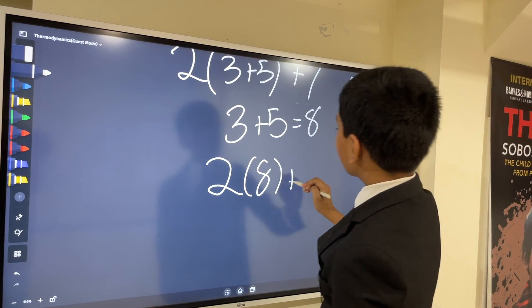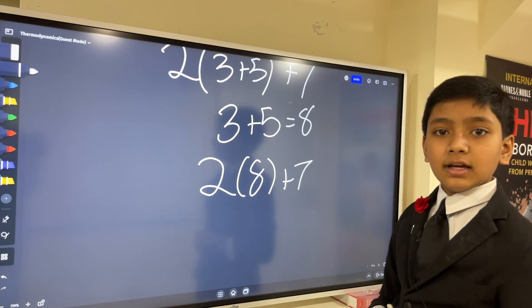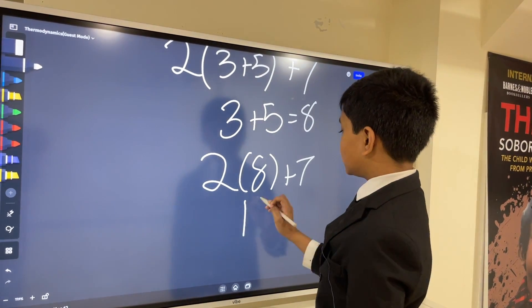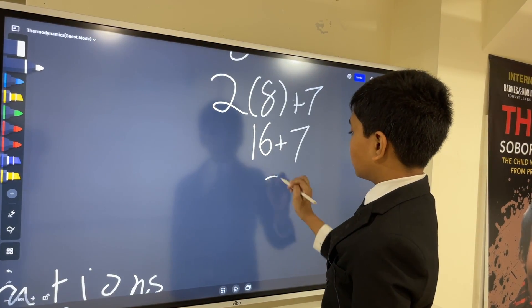And then, move on. Here we have two times eight. Two times eight is just sixteen. And then, we know what to do.